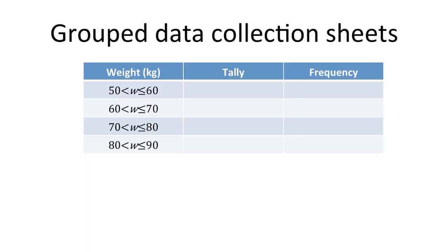In addition to doing ungrouped data collection sheets, you're also going to have to be able to do grouped ones. Here is an example of a grouped data collection sheet. Notice that first column — we're examining weight, but it's not just single numbers in each row. We've actually put in an interval on each row, and these are called class intervals.